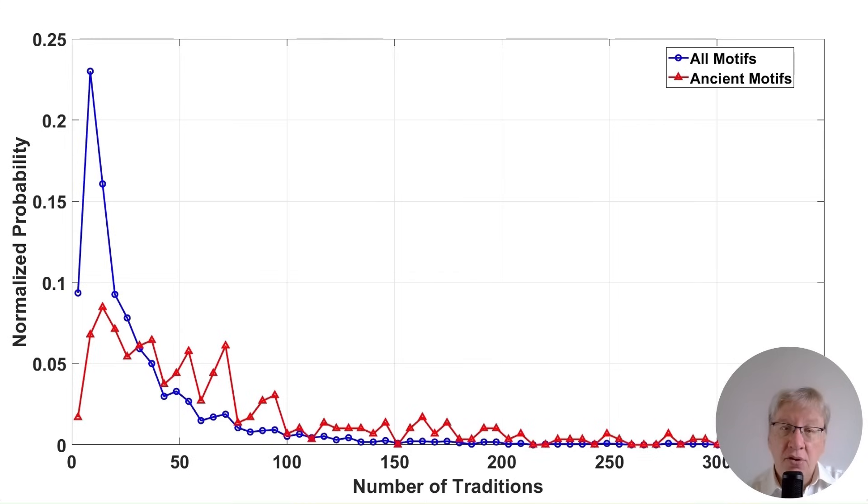This is because over the course of 2000 years, motifs with shorter lifetimes tend to disappear, leaving only the long life motifs to survive. We'll use this difference in shape to estimate the conversion factor between our simulation steps and real years.